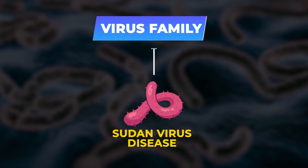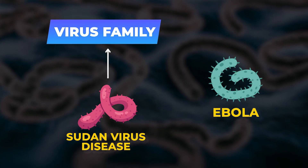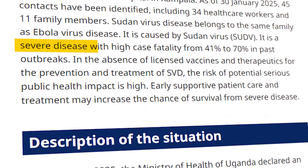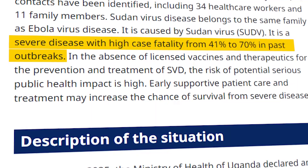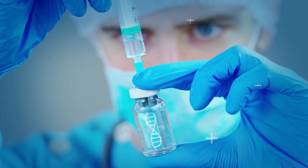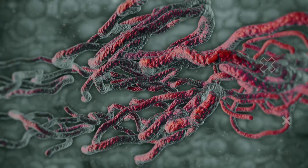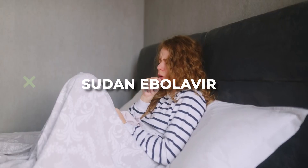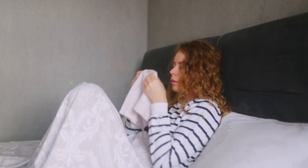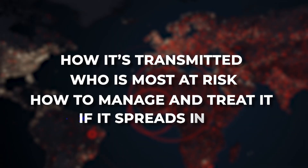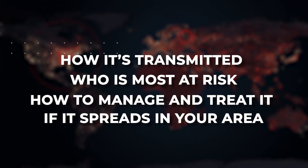Sudan virus disease is in the same virus family as Ebola. It is a serious disease with a high death rate, ranging from 41% to 70% in past outbreaks. There are no approved vaccines or treatments for SVD, so the risk to public health is high. In this video, we'll discuss everything you need to know about Sudan Ebola virus, including the symptoms and causes, how it's transmitted and who is most at risk, and how to manage and treat it if it spreads in your area.